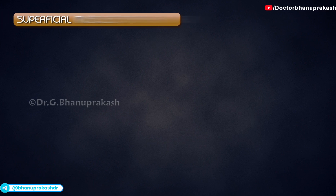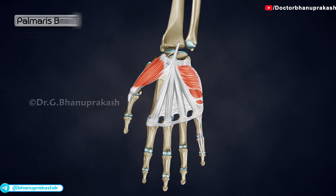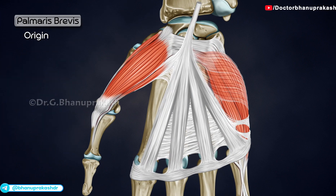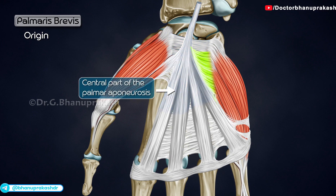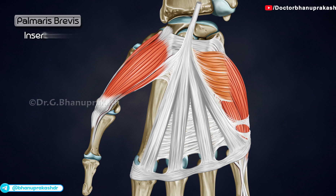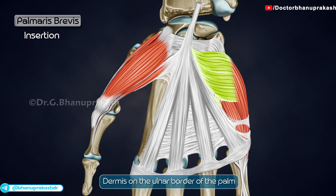Superficial Muscles of the Hand. Palmaris brevis originates at the flexor retinaculum and central part of the palmar aponeurosis. It is inserted onto the dermis on the ulnar border of the palm.